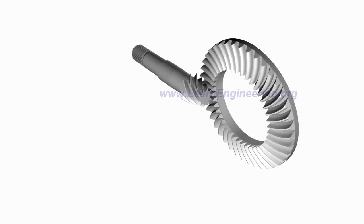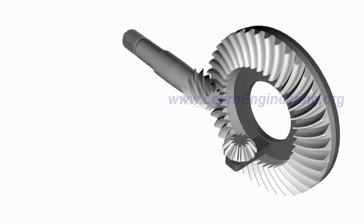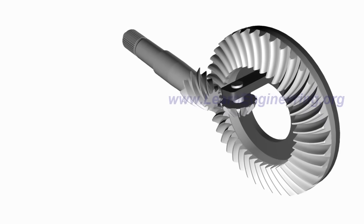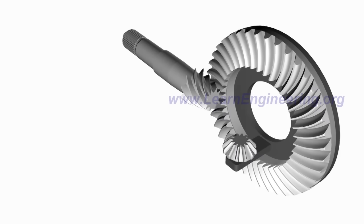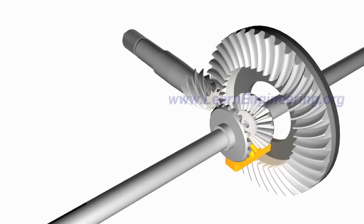Power from the engine is transferred to the ring gear through a pinion gear. The ring gear is connected to a spider gear, which is at the heart of the differential. The spider gear is free to make two kinds of rotations: one along with the ring gear, and second on its own axis. The spider gear is meshed with two side gears, so power from the engine flows from the pinion to the left and right wheels as shown.